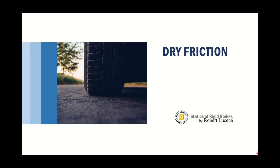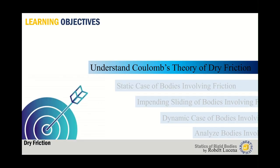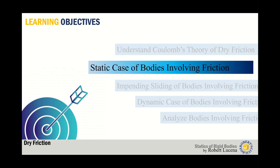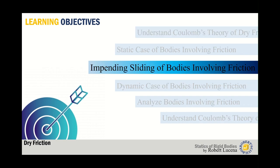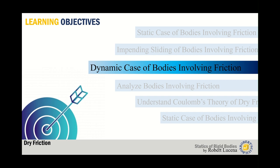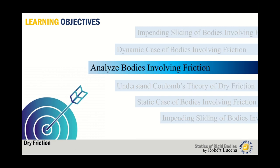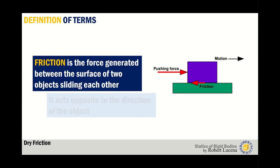Good day everyone. Today we will be discussing another topic in statics of rigid bodies, which is dry friction. The objectives of today's lecture are to understand Coulomb's theory of dry friction, which involves the static case of bodies involving friction, impending sliding of bodies involving friction, the dynamic case, and finally to analyze bodies that involve friction using Coulomb's theory of dry friction.